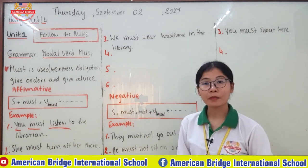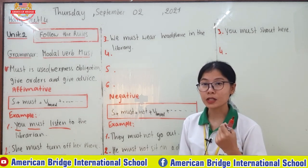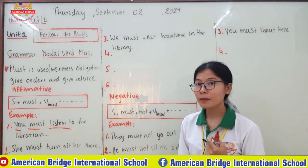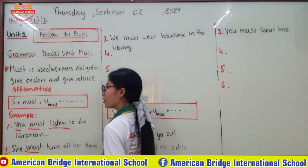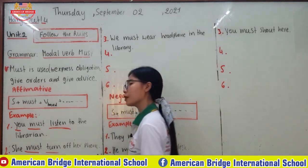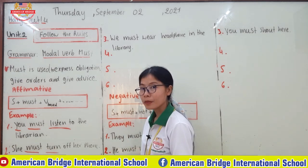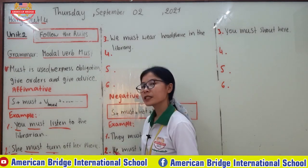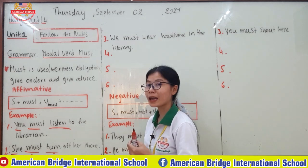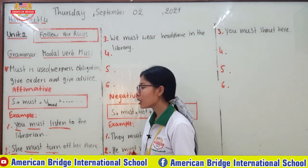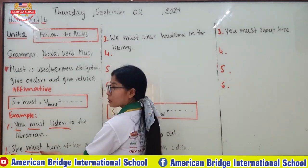You have learned about subject-verb agreement — with third person singular like 'he' or 'she,' you add 's' to the verb. But here, why don't we add 's'? Because we have 'must' here. That is why we don't add 's' to the verb. Subject + must + verb base — she is third person singular, but we don't add 's' to 'must' or 'turn' because 'must' is a modal verb.